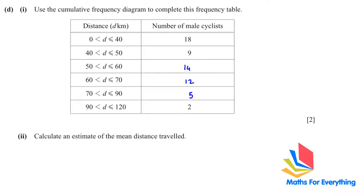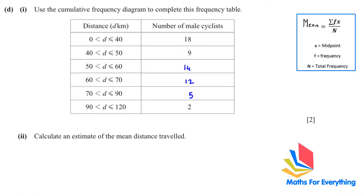Next, calculate an estimate of the mean distance traveled. For grouped data, use the formula: sum of f×x divided by n, where x is the midpoint of the class width, f is the frequency, and n is the total frequency.